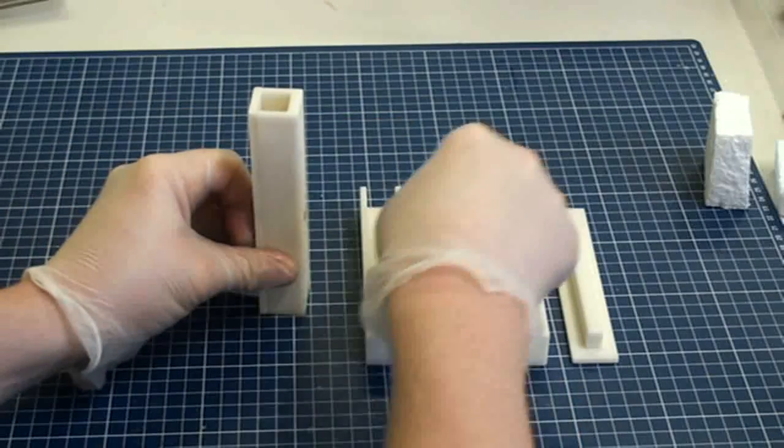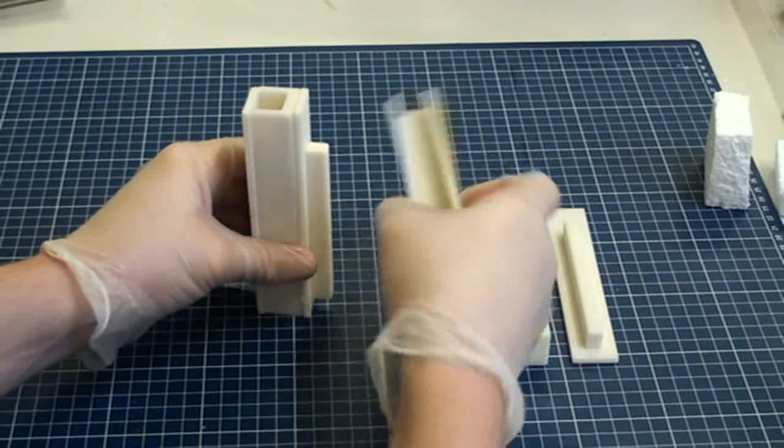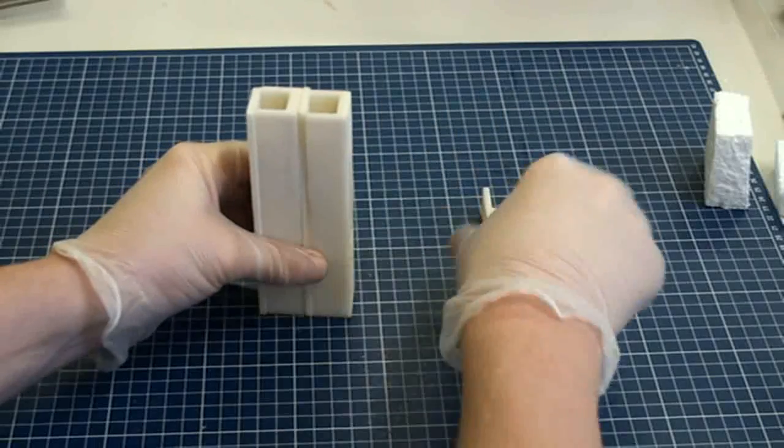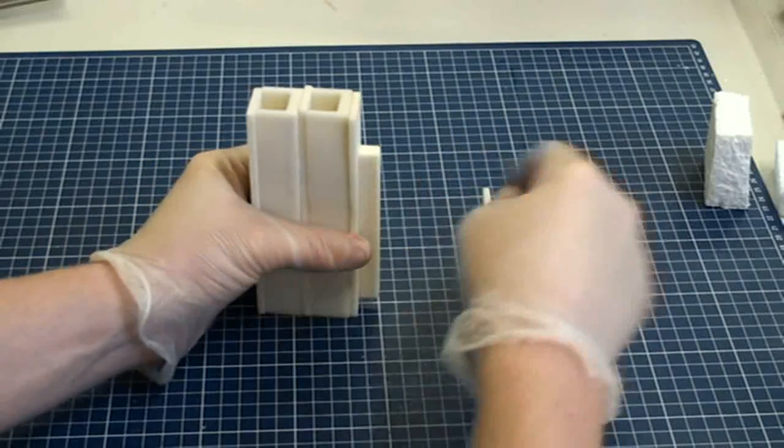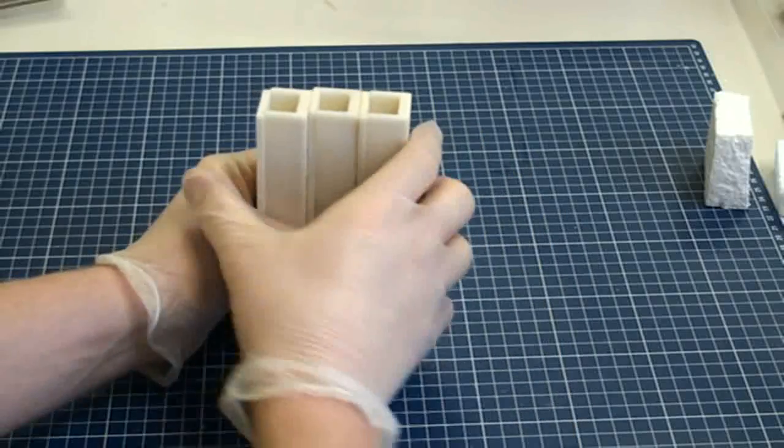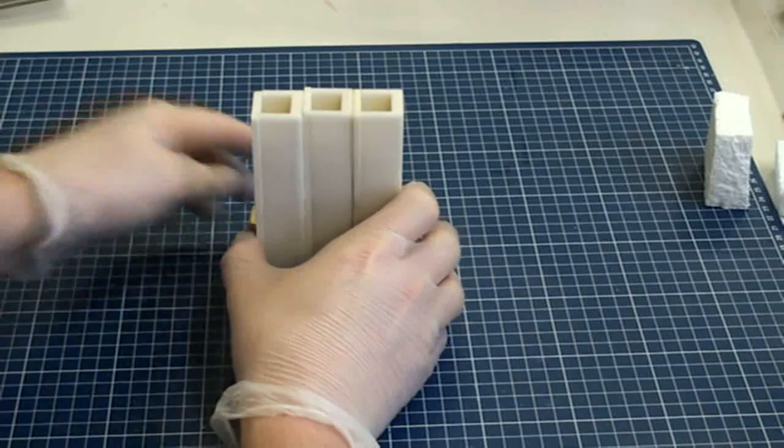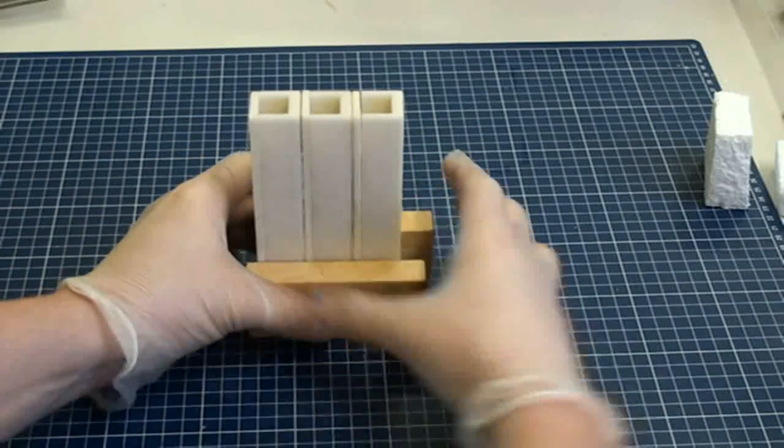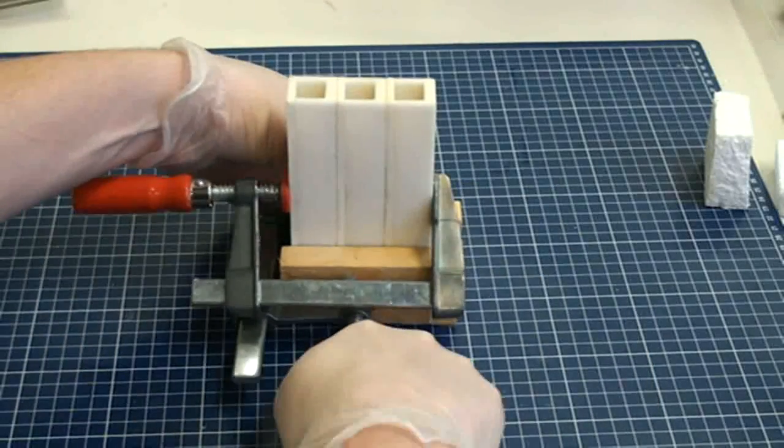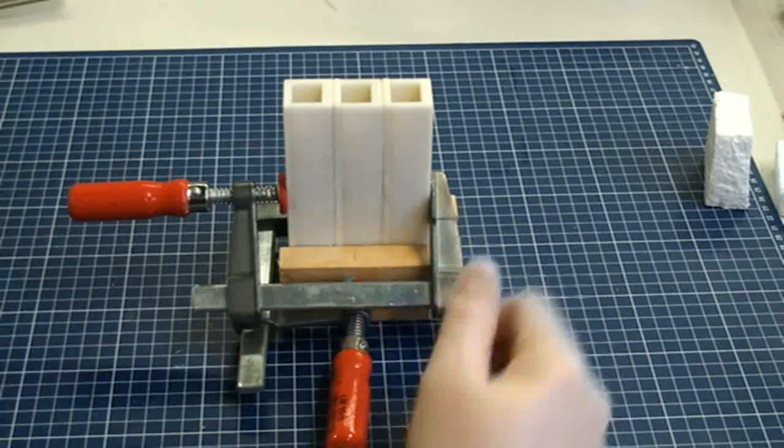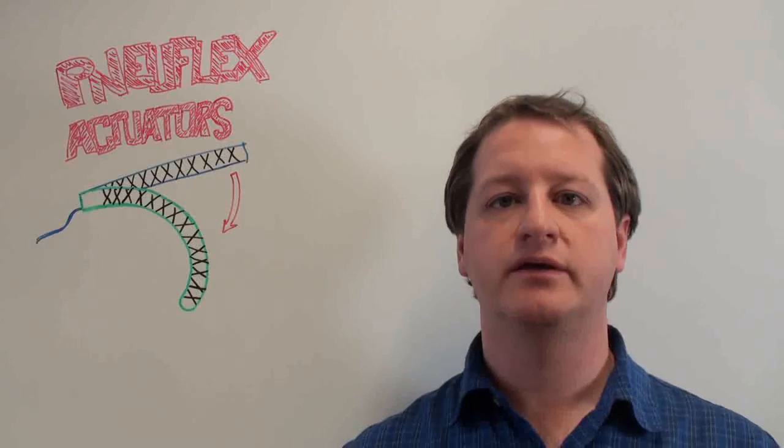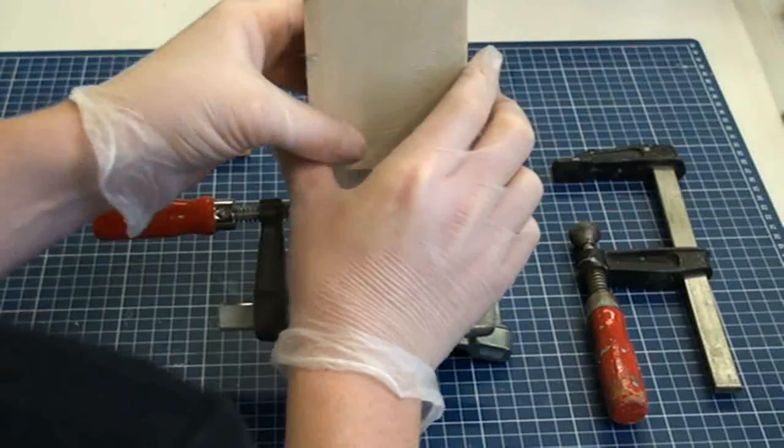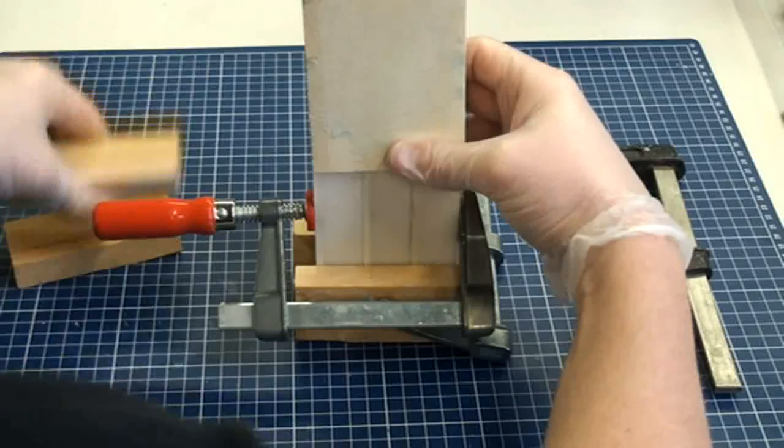Then you need to assemble the mold parts. Put them together and make sure they are fixed well. You also need to mount the funnel on top of the assembly because we need to pour the silicone there.